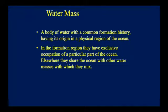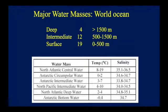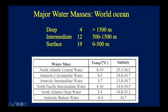What we do instead is define water masses through temperature and salinity diagrams. Scientists give certain names to these water masses, especially the most important ones — similar to the naming of major current systems. Here I'll show you the major water mass systems in the world. Their characteristics are based on temperature and salinity ranges.